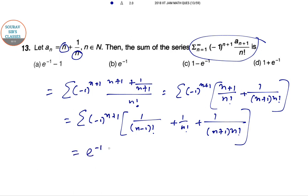So e to the power minus 1, this is 1 minus e to the power minus 1 and e to the power minus 1, which is ending up with 1 minus e to the power minus 1. So this value is option number D. Let's go to the next question.